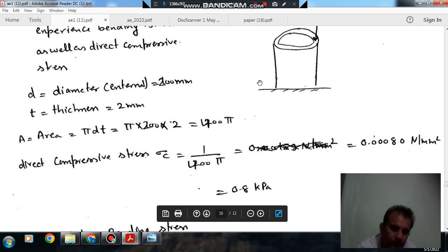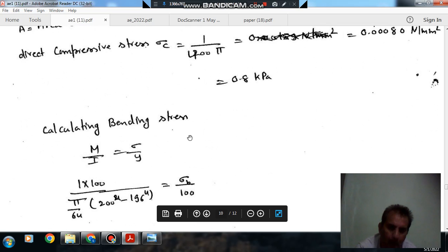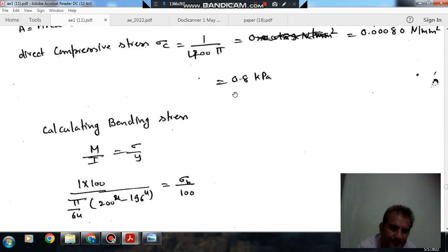The direct compressive stress is given as 1000 divided by 400 pi, which is 0.8 kPa.